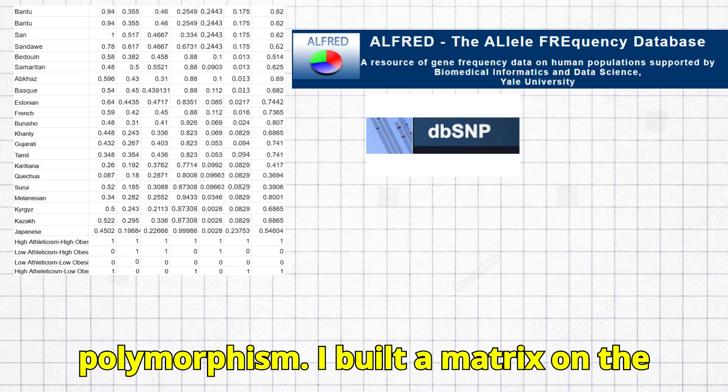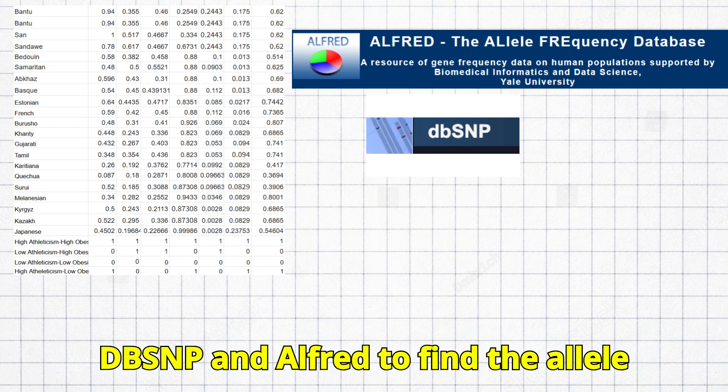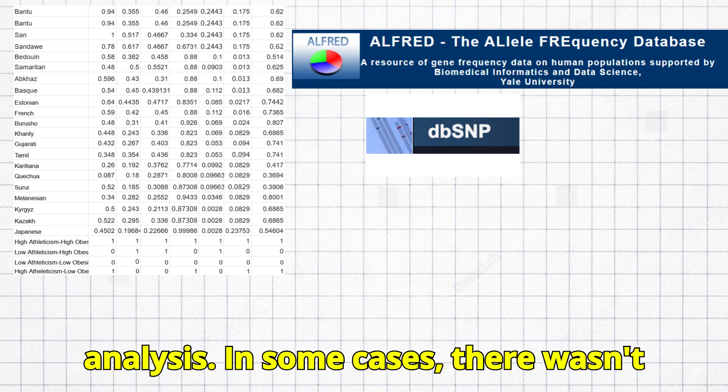I built a matrix on the basis of allele frequencies in 20 populations, using data from DBSNP and Alfred to find the allele frequencies for the 7 SNPs I chose for the analysis.